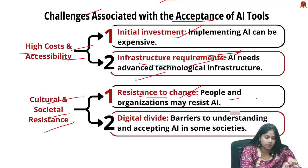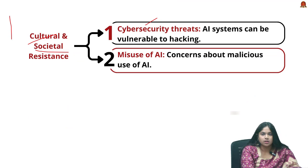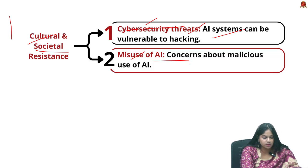Cultural and societal resistance is another challenge — people and organizations may resist adopting AI due to preference for traditional methods and fear of the unknown. In societies with low digital literacy, there are significant barriers to understanding and accepting AI tools. Cybersecurity threats also pose risks, as AI systems can be vulnerable to hacking. Finally, misuse of AI — such as deepfakes, autonomous weapons, or invasive surveillance — can lead to societal pushback.